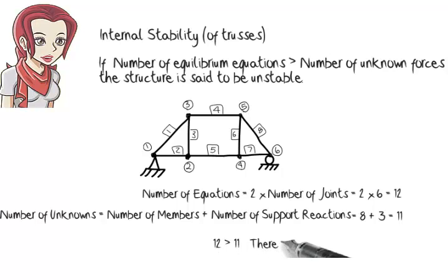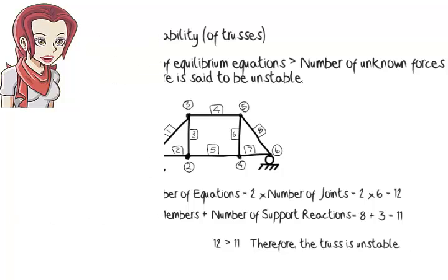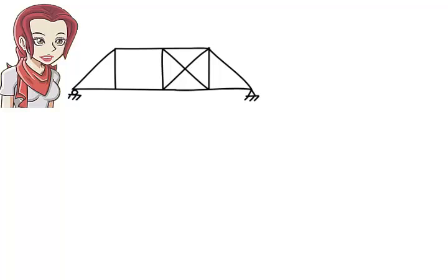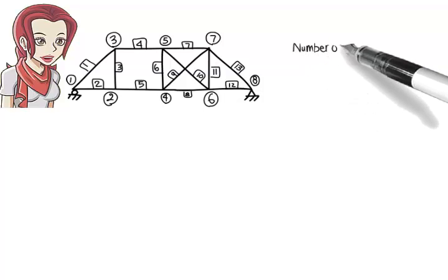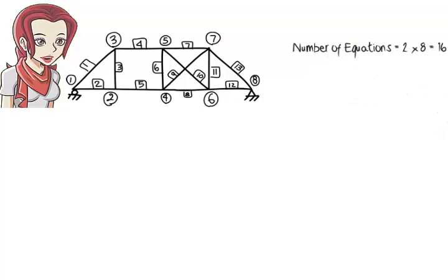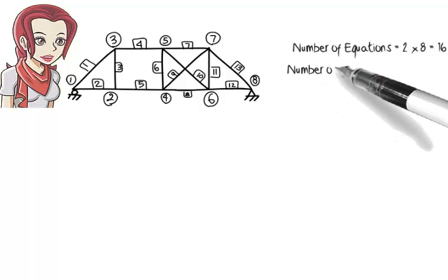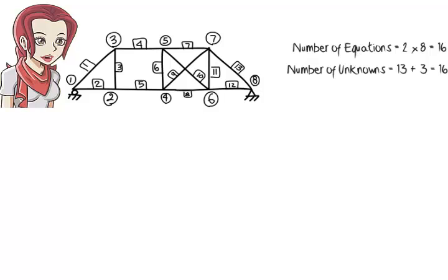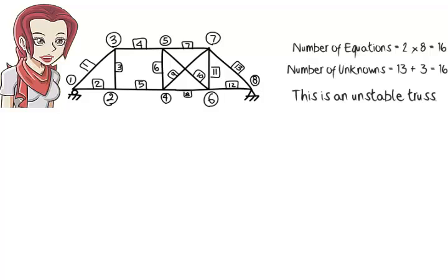This counting technique, however, does not work in all cases. For example, consider this structure. The truss has eight joints and thirteen members. Therefore, the number of equations equals two times eight or sixteen, and the number of unknowns equals thirteen plus three or sixteen. Clearly here, the number of equations does not exceed the number of unknowns, yet the structure is unstable. Why? Because it can be shown that under certain loading pattern, the static equilibrium of the structure cannot be maintained.